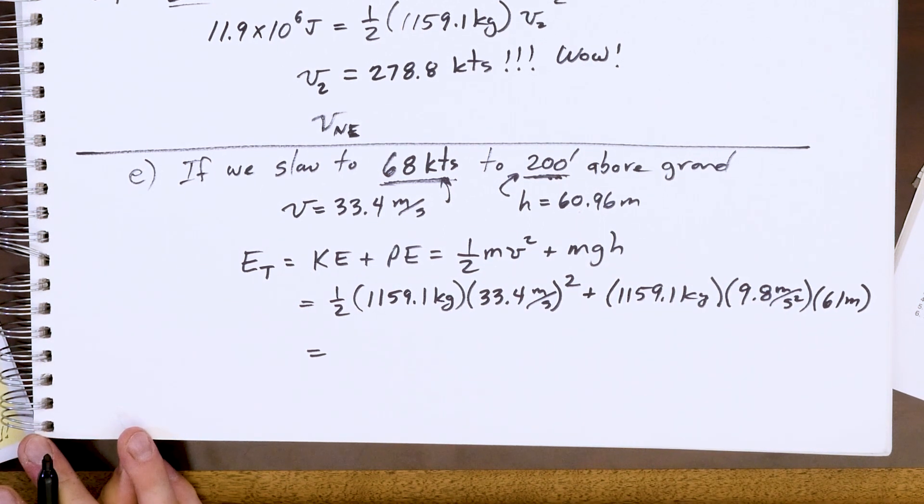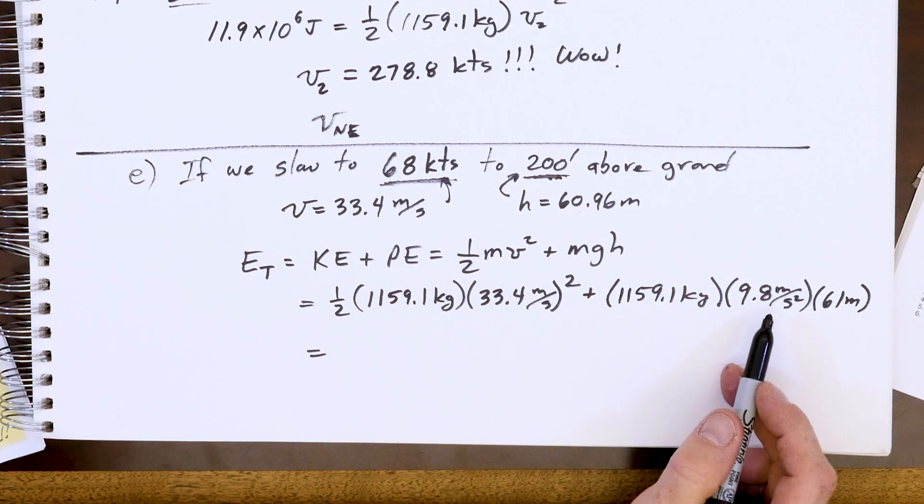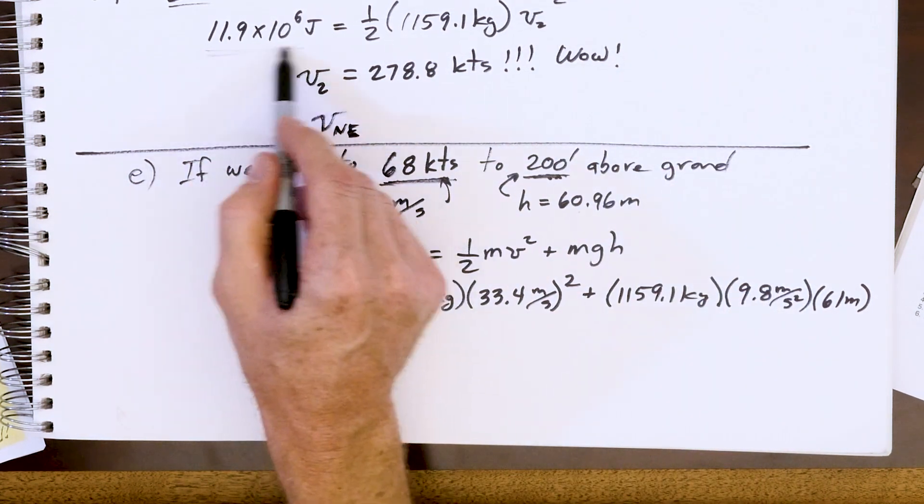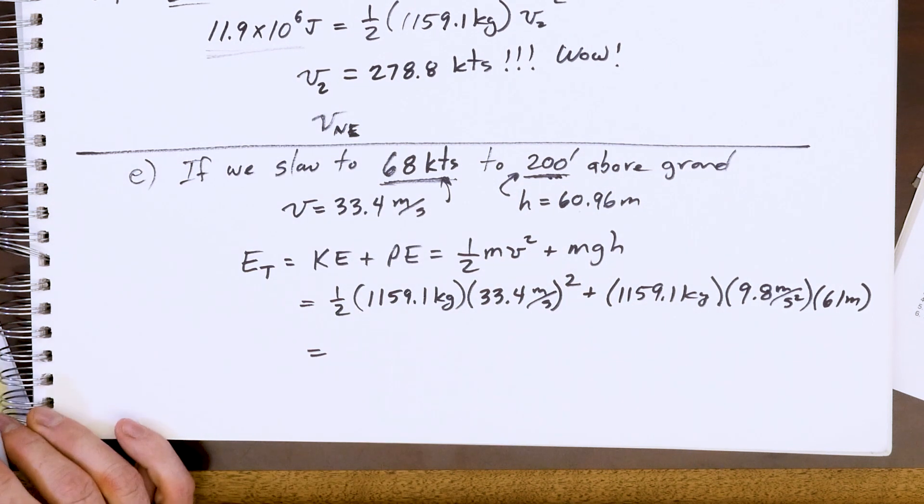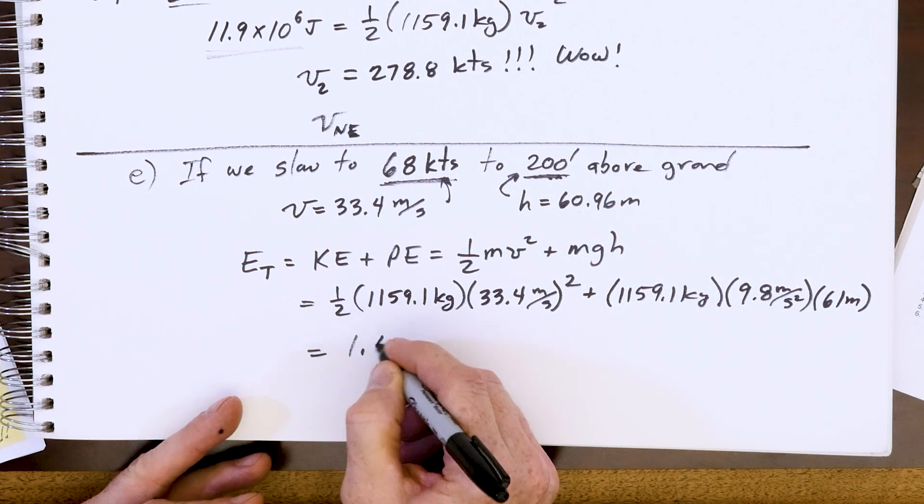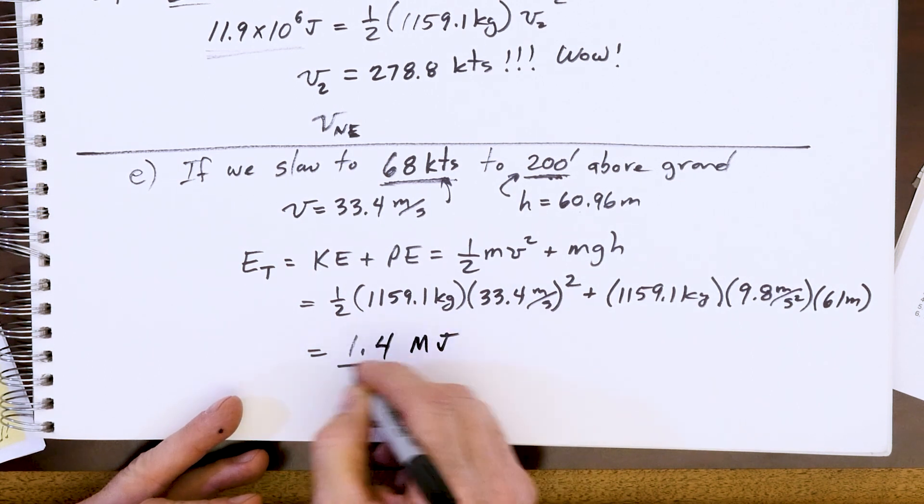Remember again, this is total energy. And remember before it was how much? It was 11.9 megajoules when we were at a thousand feet and 100 knots. So you crunch all these numbers and you get 1.4 megajoules. Wow!